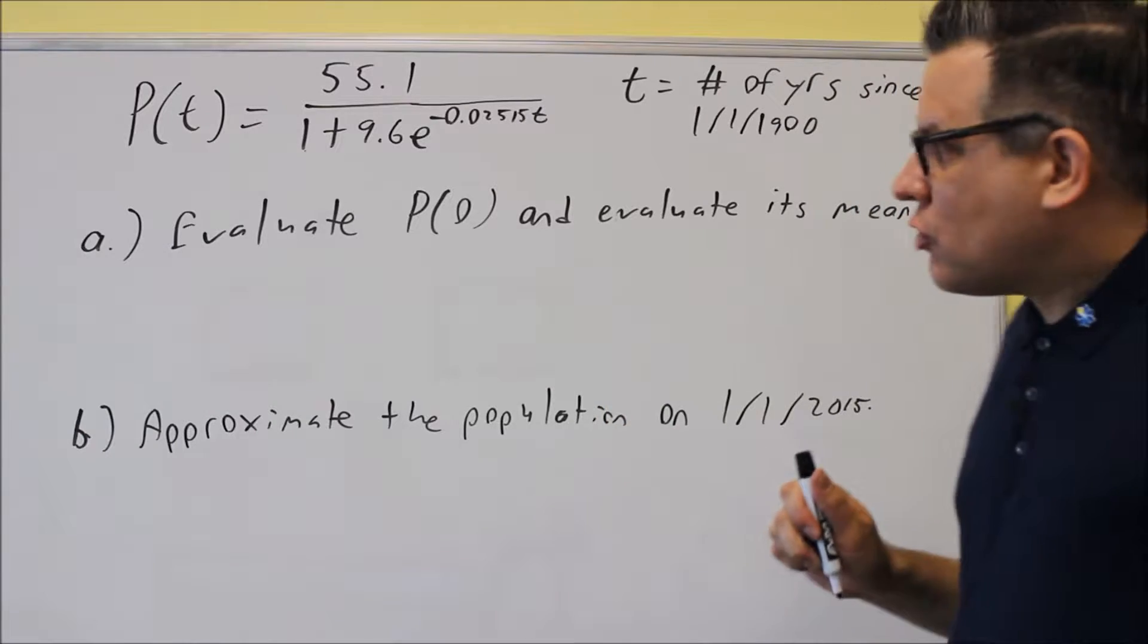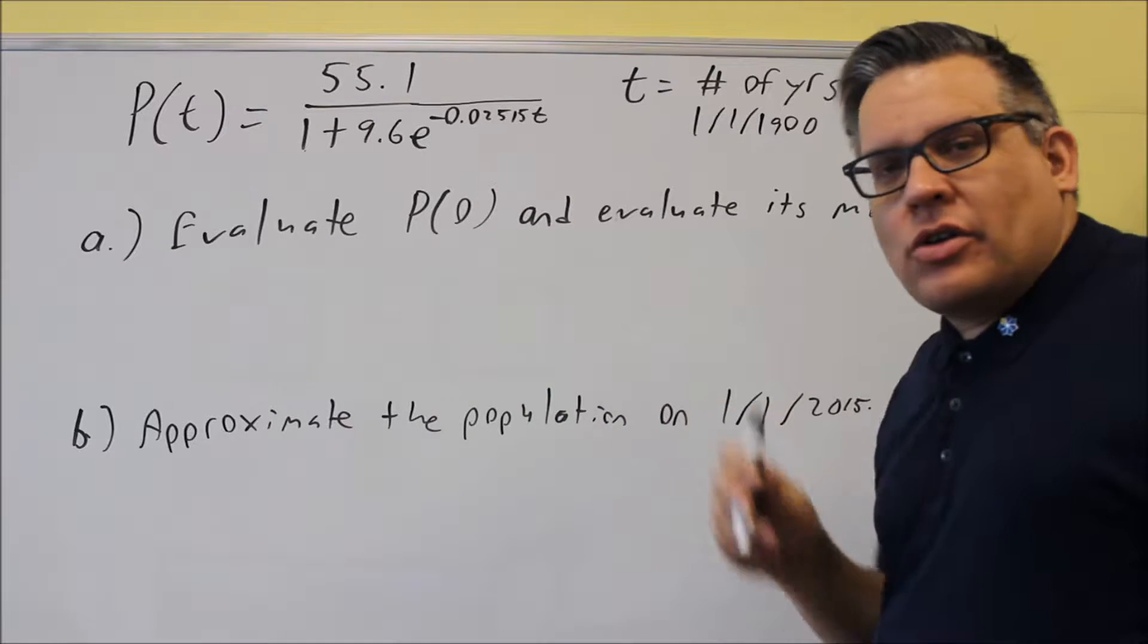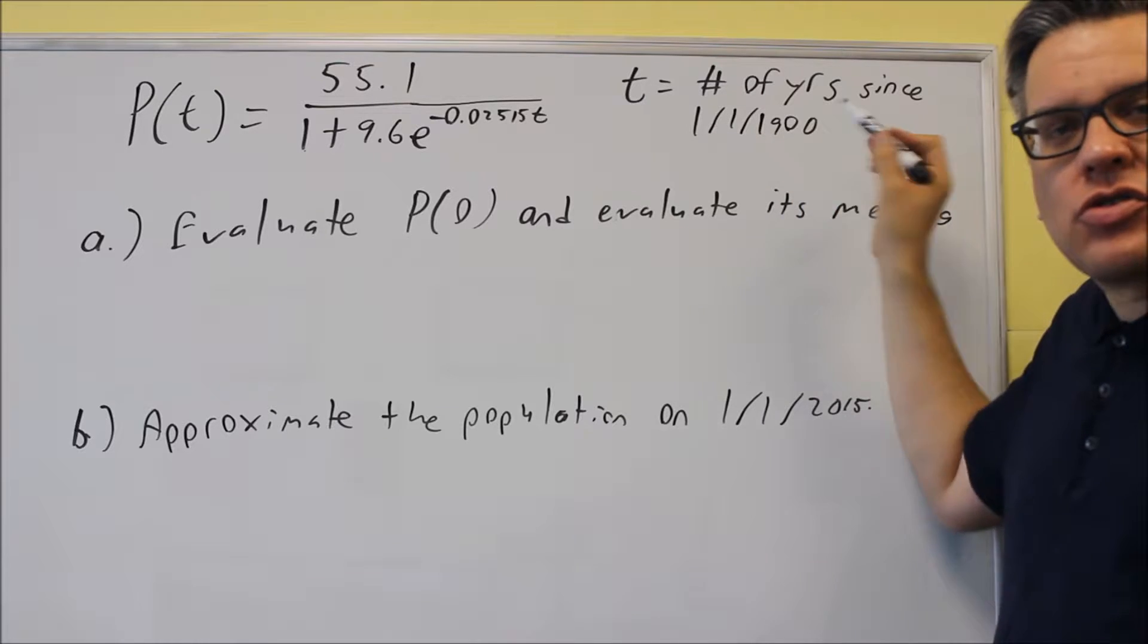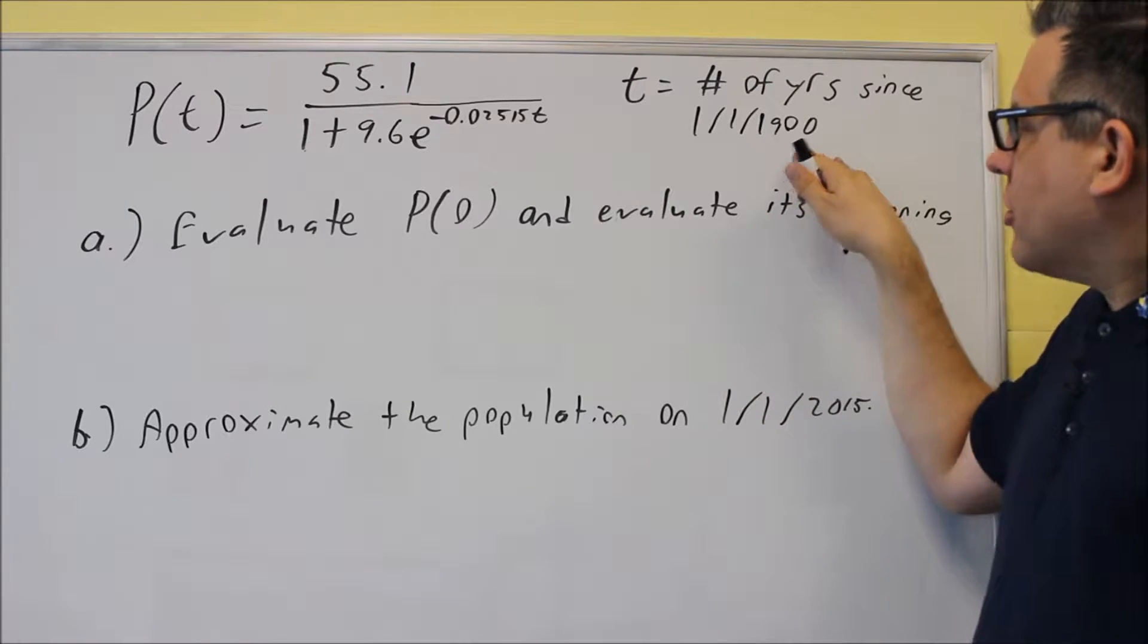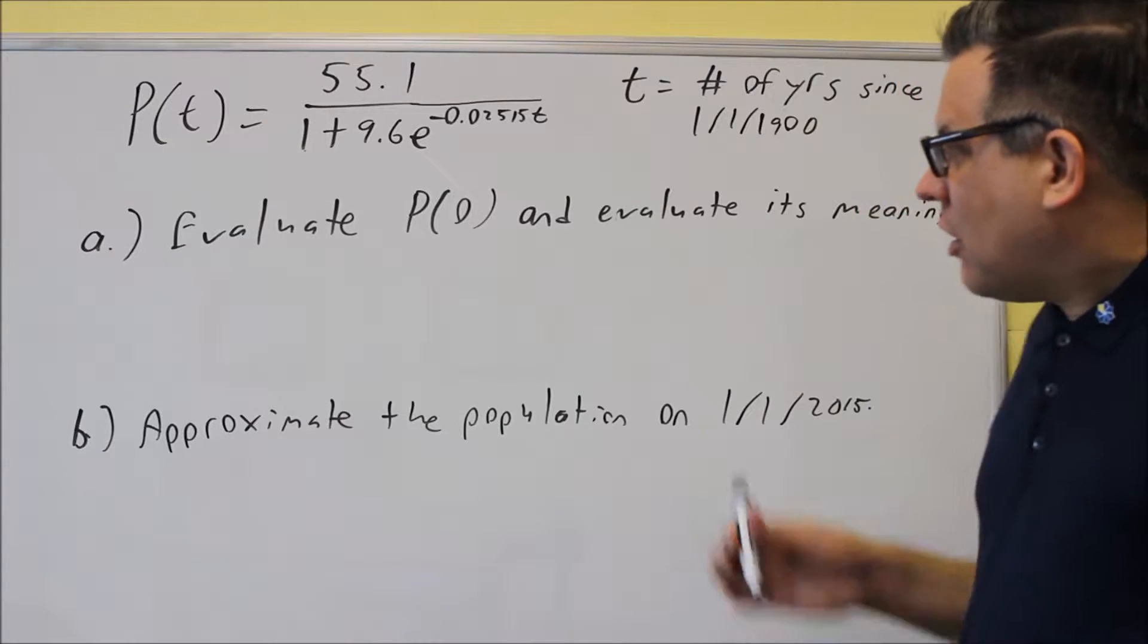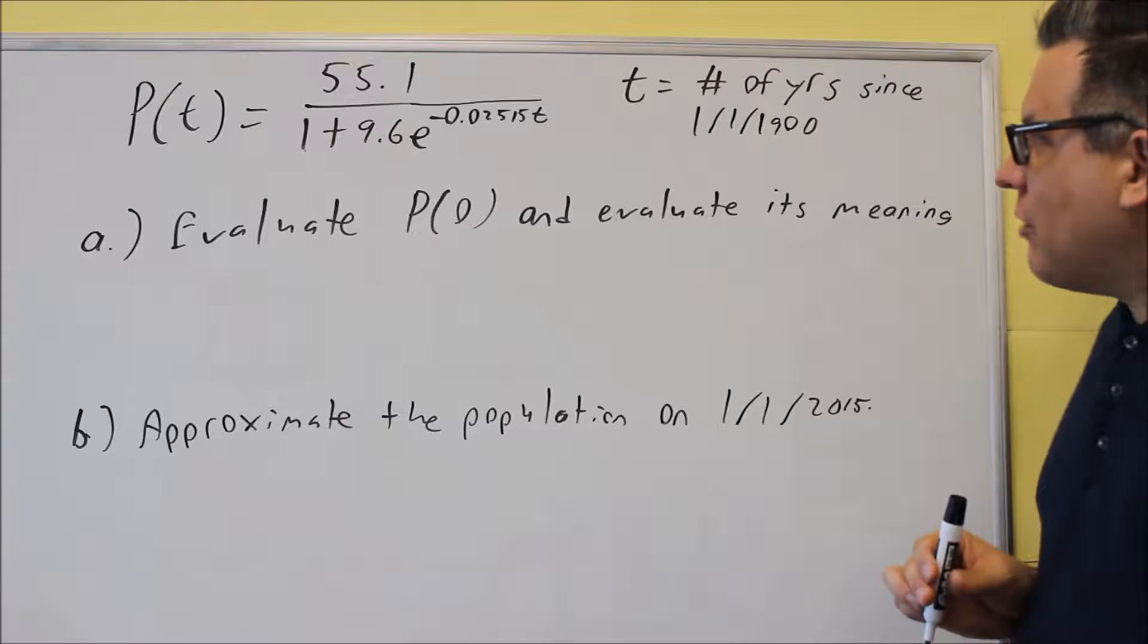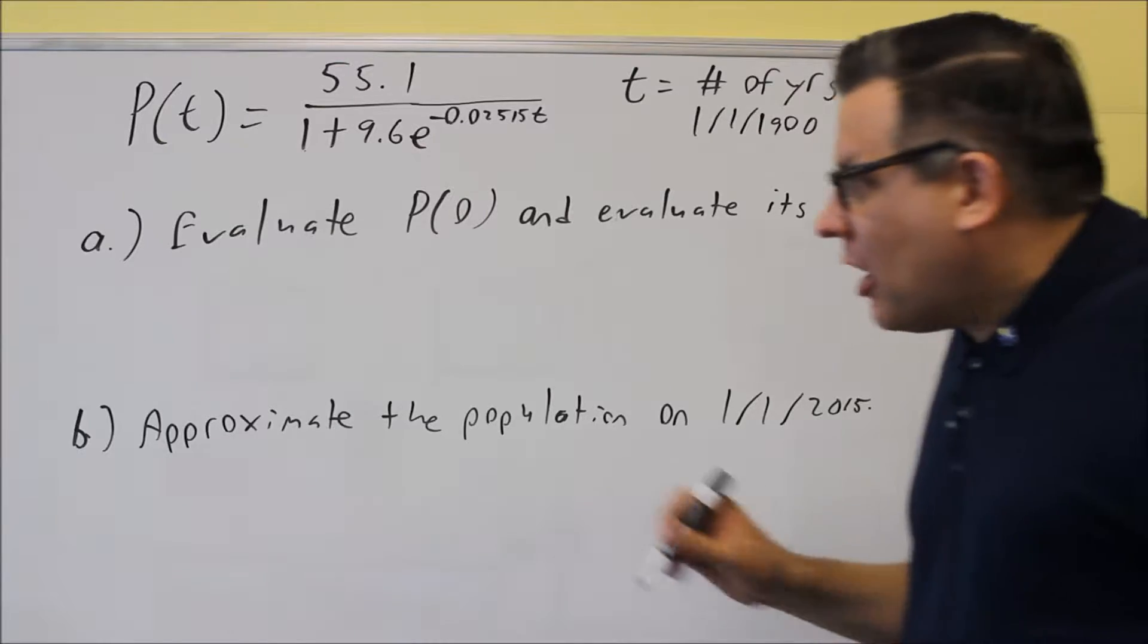Okay, so first what we're going to do here is we're going to go through these questions based on this model that's given. Now to give you a little background with this model, this model is for the population of Canada and the T that you see in that formula is the number of years since, this means January 1st, 1900. So whenever you have a T that's in here, it just refers to how many years after 1900. So you're estimating the population of Canada. It says first of all, evaluate P(0) and interpret its meaning.